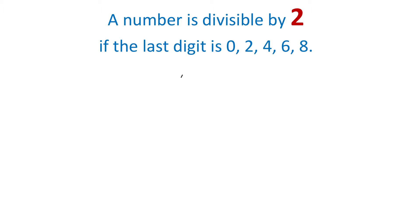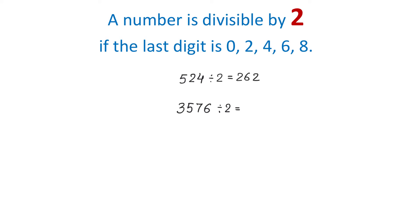For example, the number 524 is divisible by 2 because the last digit is 4, and 524 divided by 2 is 262. The number 3,576 is also divisible by 2 because the last digit is 6, and 3,576 divided by 2 equals 1,788.